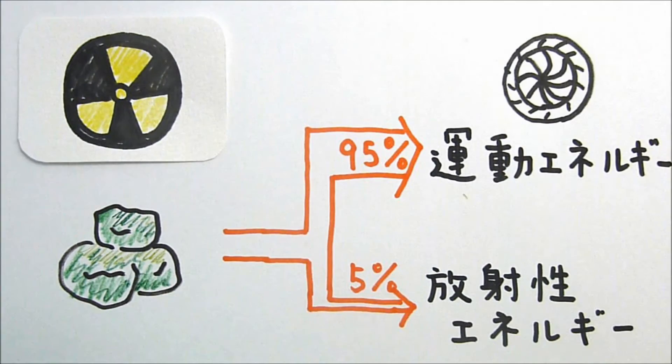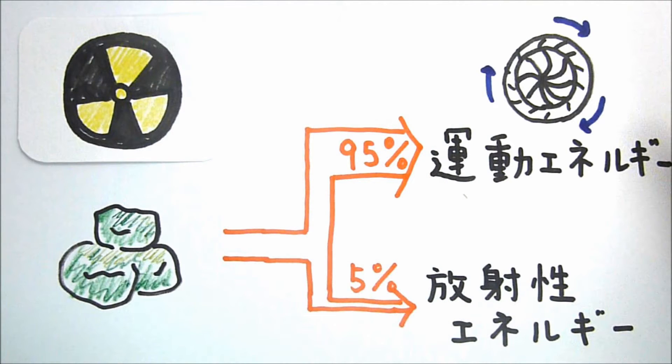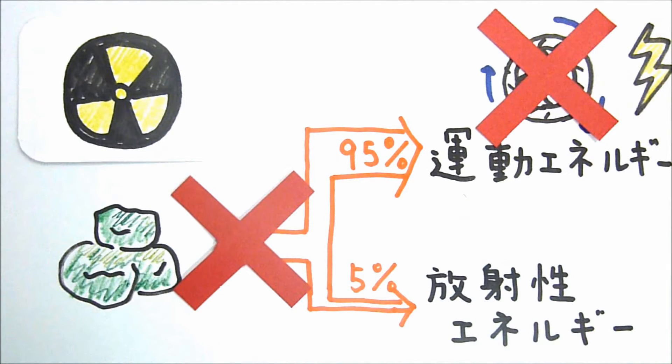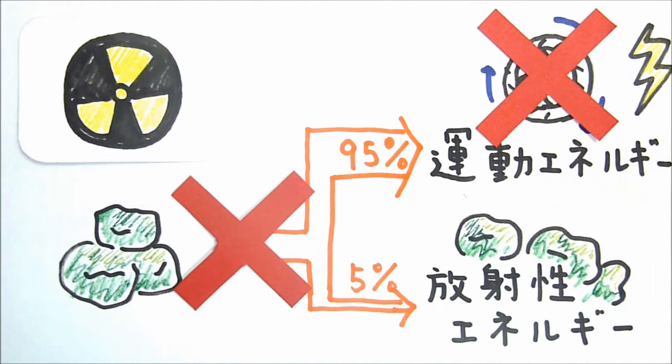Kinetic energy can be instantly converted into electricity with a turbine. In case of an emergency, this process can be stopped immediately. But radioactive energy is the result of a chemical reaction that cannot be stopped. It continues generating heat.